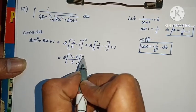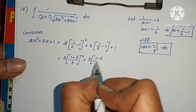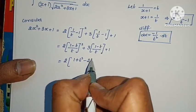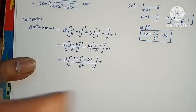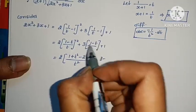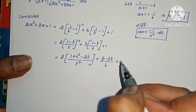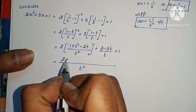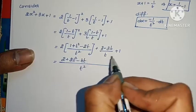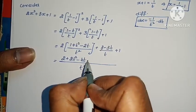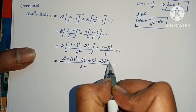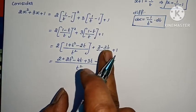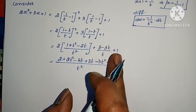Substituting x equals (1 minus t) by t: we get (1 minus t by t) whole squared plus 3 into (1 minus t by t) plus 1. Expanding (a minus b) squared gives a squared plus b squared minus 2ab by t squared, plus 3 minus 3t by t plus 1. The highest power is t squared, and after combining terms: t squared plus 2t squared, giving expressions to simplify.